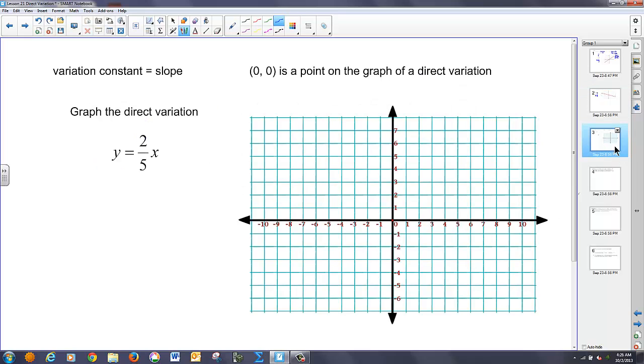Now, one of the things you're also going to notice is that the variation constant in each of the lines that we've talked about is actually the slope. And each graph in a direct variation is going to go through zero, zero. Let's just go back and take a look at our first two slides again.